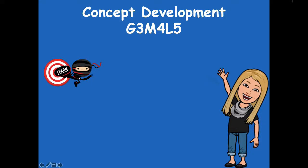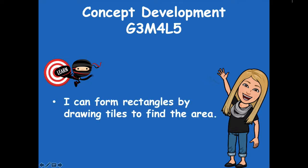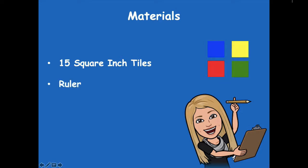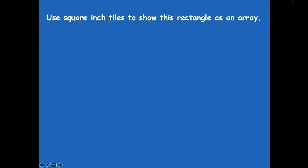Hey boys and girls, it's Mrs. Walker. For our lesson today we're going to talk about how we can draw tiles in a rectangle to help us find the area. Our learning goal says: I can form rectangles by drawing tiles to find the area. The materials you'll need are 15 square inch tiles, a ruler, and a whiteboard. Make sure you grab those materials and then we'll get started.